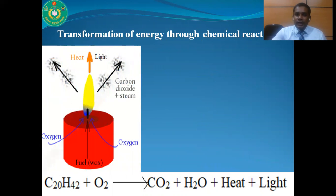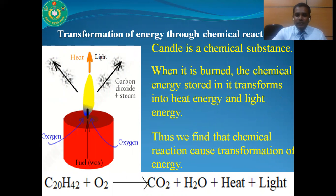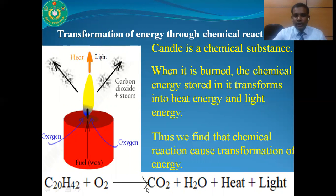Why do we get light energy and heat energy? Because candle is a chemical substance composed of carbon and hydrogen. The compound produced from carbon and hydrogen is called a hydrocarbon, so candle is a hydrocarbon. When it burns in the presence of oxygen, we get carbon dioxide and water. During the formation of carbon dioxide and water, the bonds between the atoms break down, and during formation of carbon dioxide and water molecules, energy is evolved.